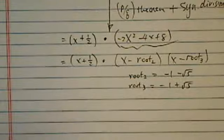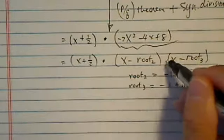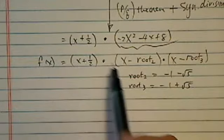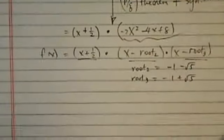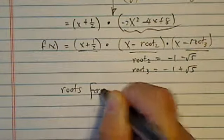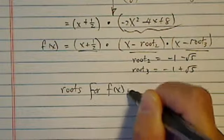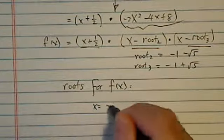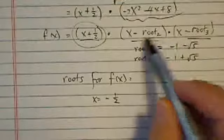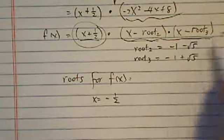So basically, we've rewritten our fx into three parts, part one, part two, part three. So therefore, the roots for fx is here. X equal to minus half, you set this part equal to zero. And then over here, this part is using the quadratic formula.